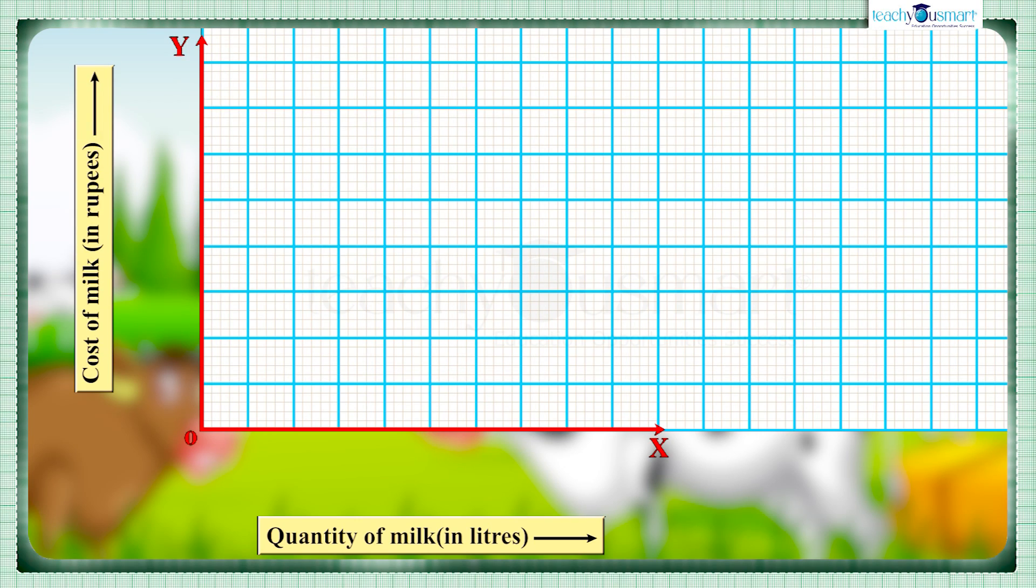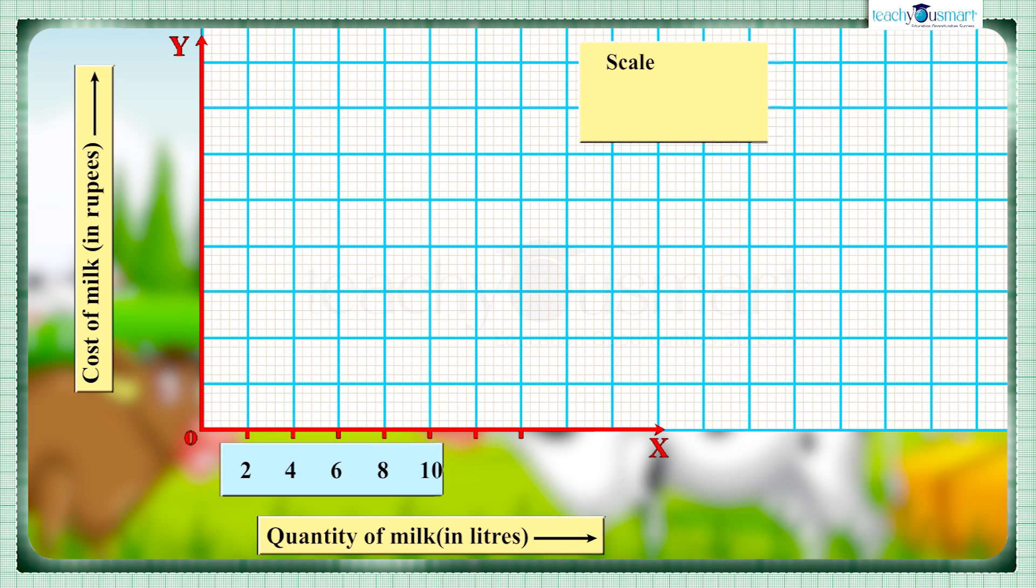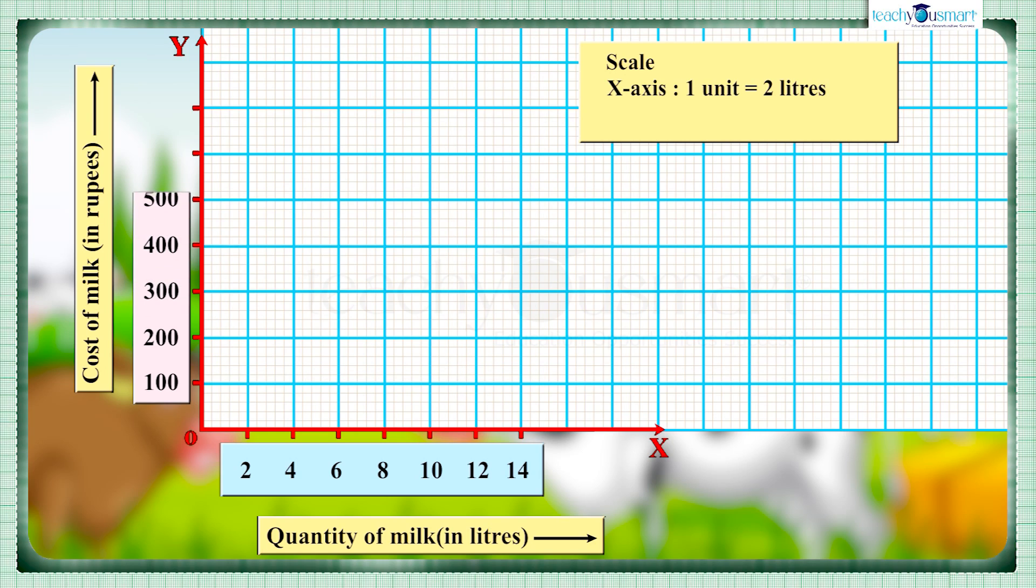Let us choose the scale as on the x-axis one unit equals two liters, and on the y-axis one unit equals 100 rupees.